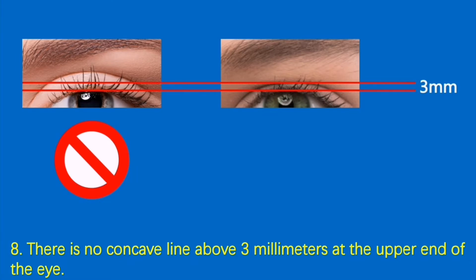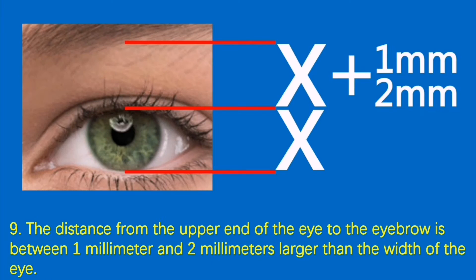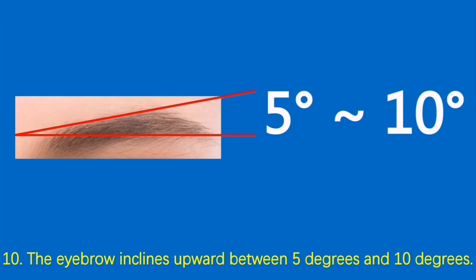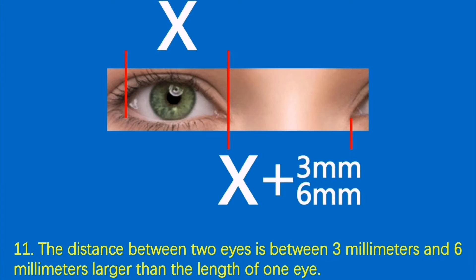Condition 8: There is no concave line above 3 millimeters at the upper end of the eye. Condition 9: The distance from the upper end of the eye to the eyebrow is between 1 millimeter and 2 millimeters larger than the width of the eye. Condition 10: The eyebrow inclines upward between 5 degrees and 10 degrees. Condition 11: The distance between the two eyes is between 3 millimeters and 6 millimeters larger than the length of one eye.